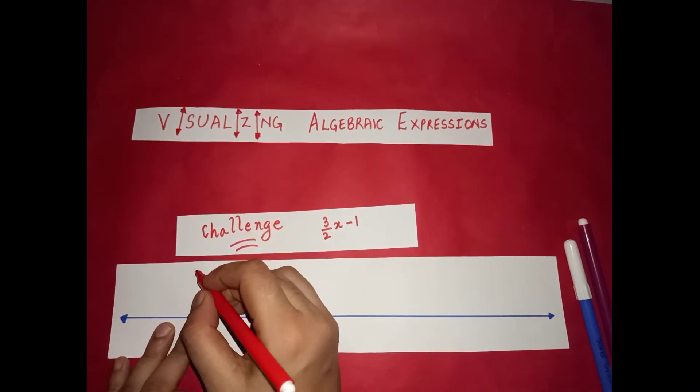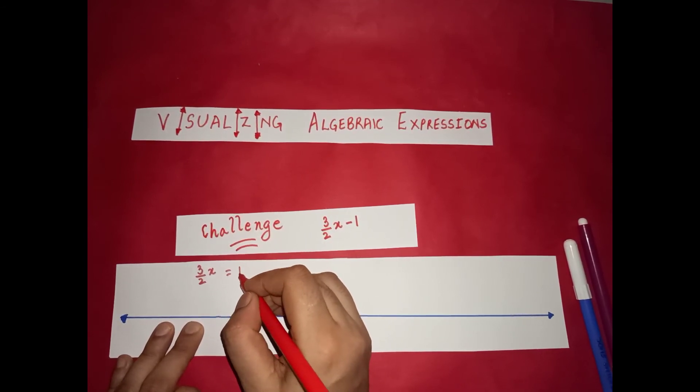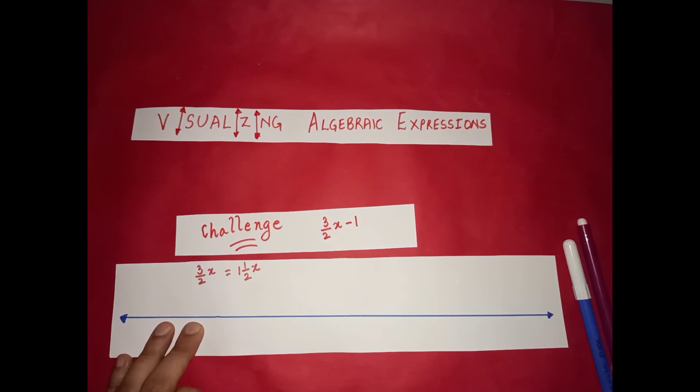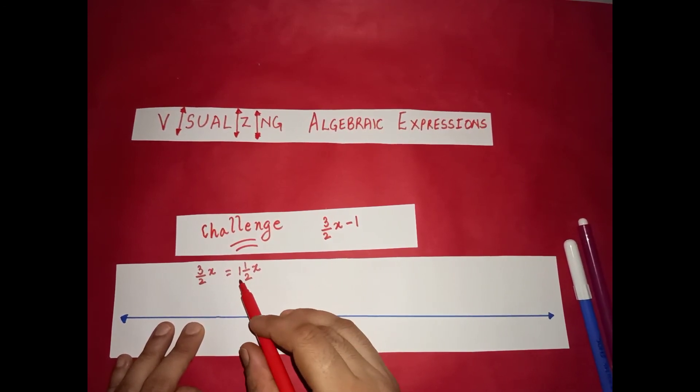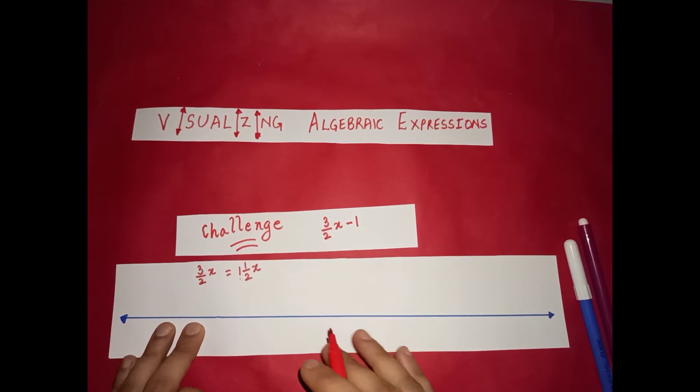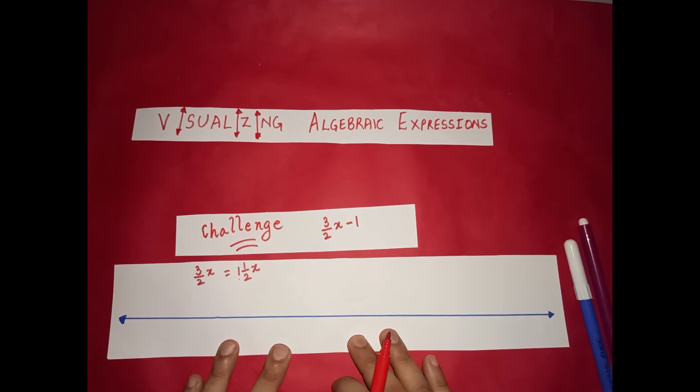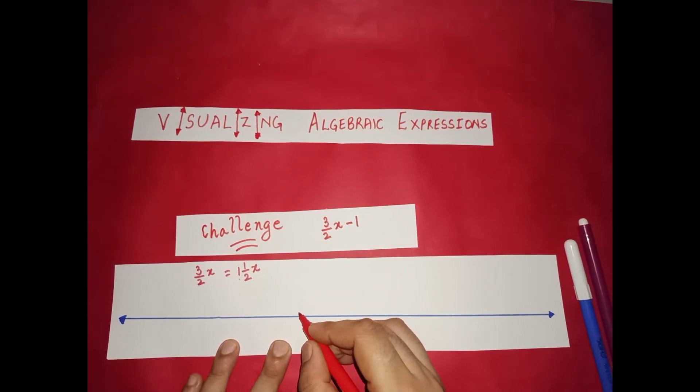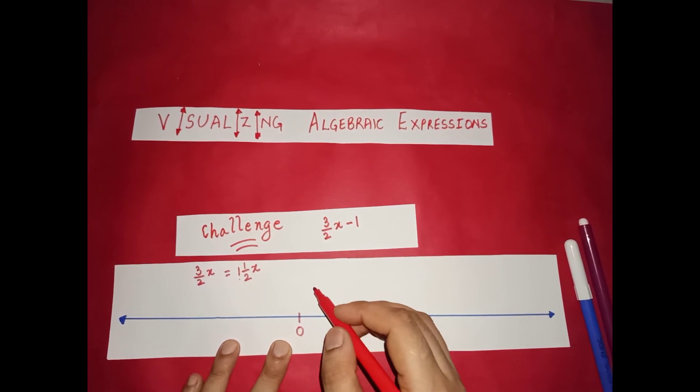3 over 2 x means if you change it into mixed fraction it will be 1 and a half x. That means we have 1 full x and 1 half x. So we have to make a jump of 1 full x and 1 half x. And 3 by 2 x is positive. So we have to go in the positive direction, that is towards the right of 0. If this is 0, we will go in this direction.